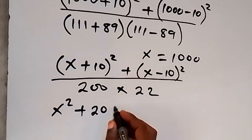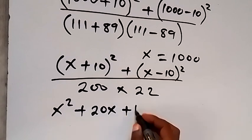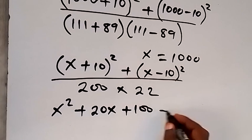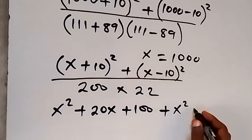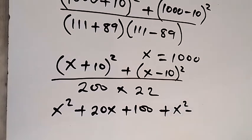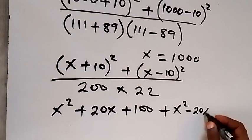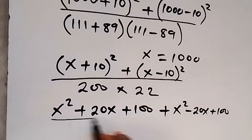And then from here we expand the numerator. When we expand this we have x squared, then plus 2 times x times 10, that's plus 20x, then plus 10 squared, that's 100. Then we expand the second bracket as well, that's plus x squared, then minus 2 times x times 10, that's minus 20x, then plus 10 squared which is also 100.